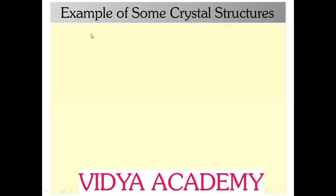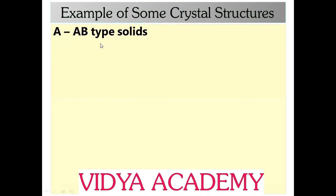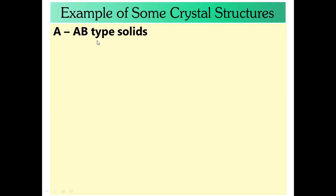Examples of crystal structures: AB type, A2B type, AB2 type. These types are examples. The first part we are going to study is AB type solid.